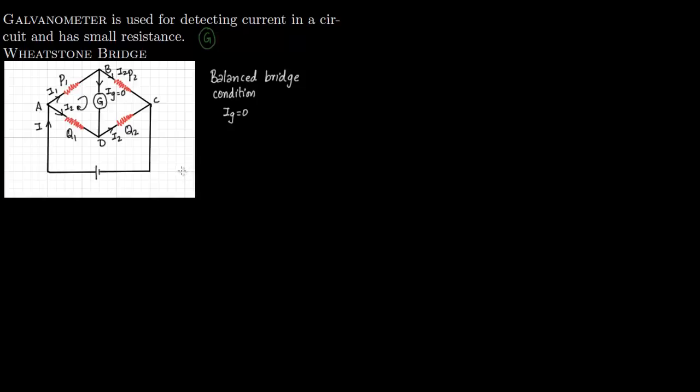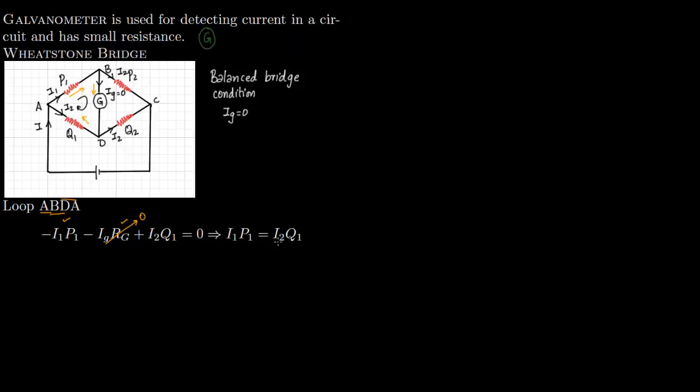Coming back to loop ABDA: I1 is in the same direction as the loop, so you get a negative sign, giving minus I1·P1. Then going from B to D, I of G is in the same direction as the loop, giving minus I_G·R_G. Finally going from D to A, the current flows from A to D, which is opposite to our loop direction, so you get a plus sign: plus I2·Q1, set equal to zero. Under the balanced bridge condition, I of G is zero, so that term drops out. This is our first equation.